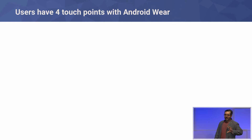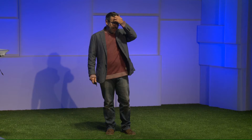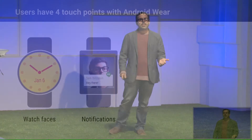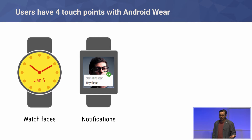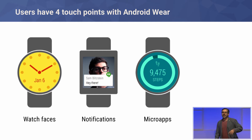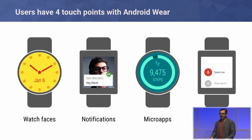Before we get into watch faces, here's a quick overview of the user experience entry points in Android Wear. You have watch faces — your classic watch experience. You have notifications bridged from your phone or thrown by apps on your watch. You have micro apps, which are mini versions of phone apps running on your watch providing more immersive experiences. And you have voice and actions — you demand something from your watch, talk to it, and launch an action.